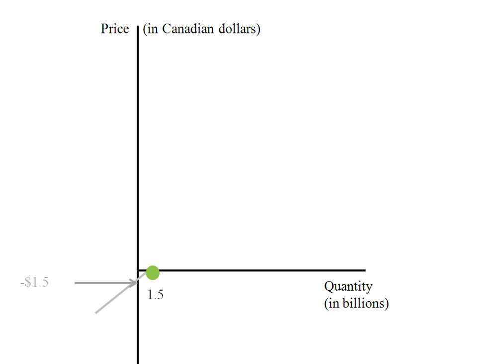So I'd actually have to extend my vertical axis down into the negative quadrant to show that negative 1.5. But since a price of negative 1.5 doesn't make any sense, we often just leave that off.